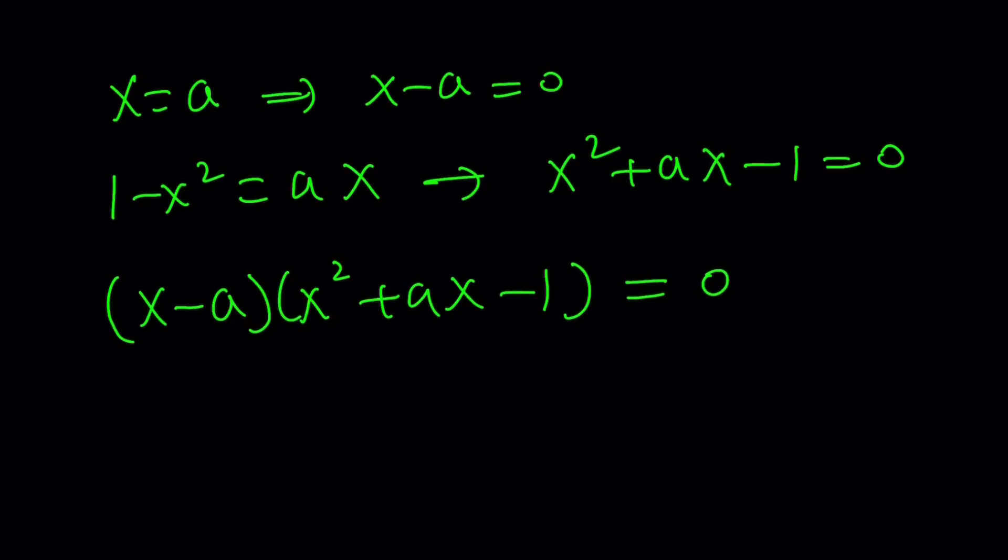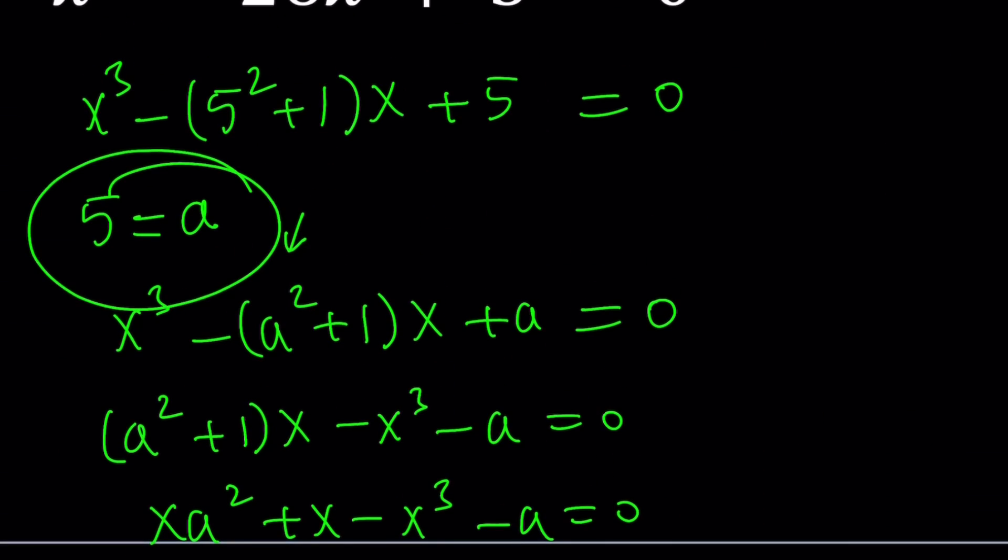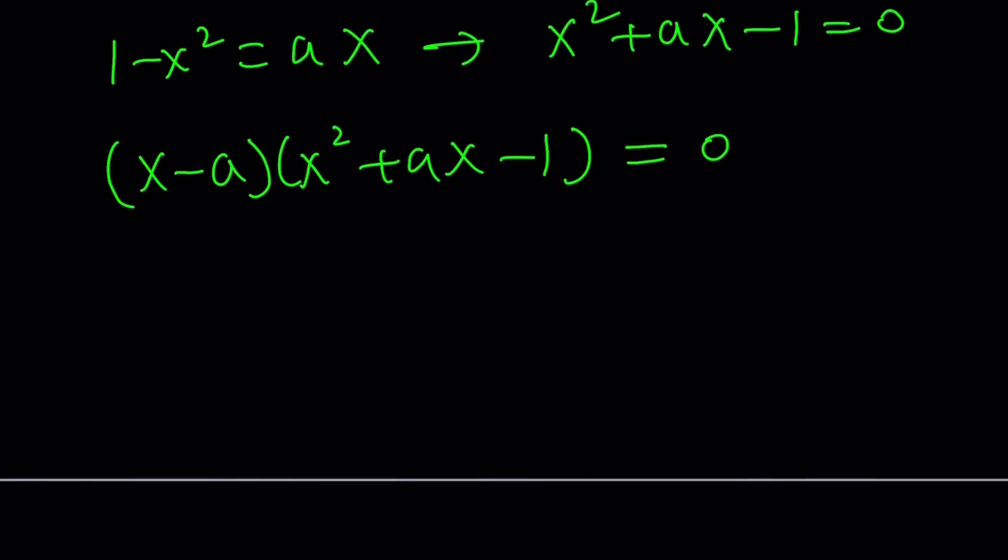Now we do know that a is equal to 5 because 5 is equal to a. Remember that? That's our weird substitution. So we can go ahead and replace a with 5 now. So that's going to give us (x minus 5) multiply by (x squared plus 5x minus 1) equals 0.